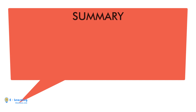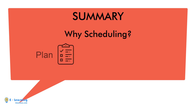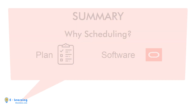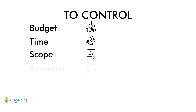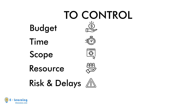As a conclusion, if asked why we schedule, the answer is: we schedule to make a plan with the help of software like Primavera — to control budget, time, scope of work, resources, risk, delays, and quality. All these factors are connected to each other like a chain.